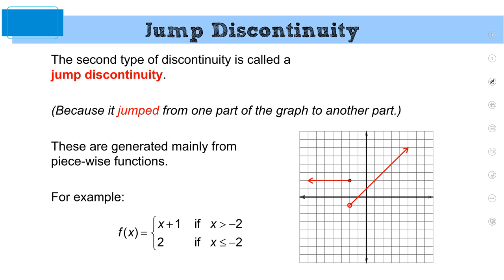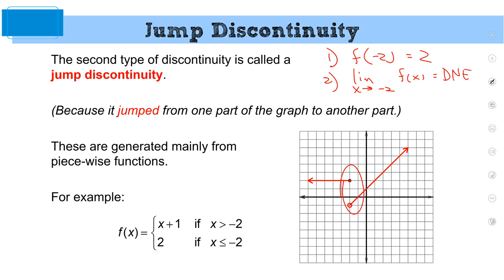Next: jump discontinuity — as Nathan said, a piecewise function. Let's go through it using the formal definition. You look at the graph and figure out where is there a funky point — here at x = -2. Part one: what's f(-2)? Two. What's the limit as x approaches -2? DNE — the left-hand limit does not match the right-hand limit. We're done. It has no limit — we're done.